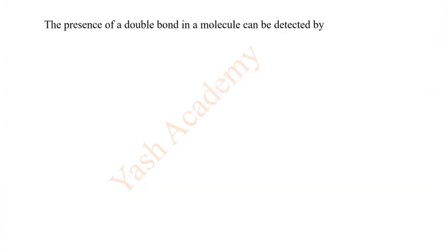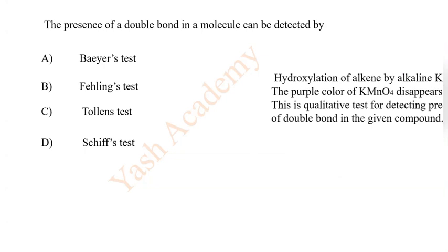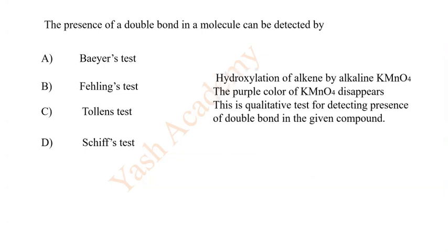The presence of a double bond in a molecule can be detected by: A Baeyer's test, B Fehling's test, C Tollen's test, D Schiff's test. Here correct answer option is A: Baeyer's test.